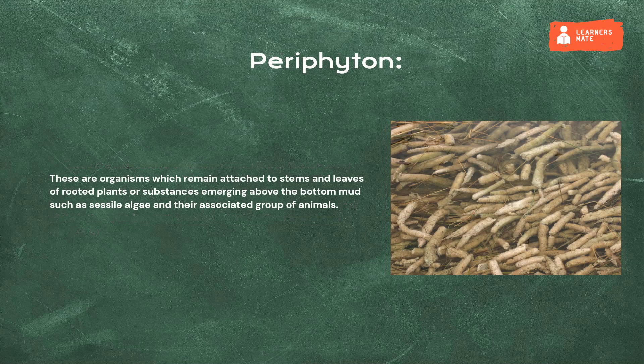Periphyton: these are organisms which remain attached to stems and leaves of rooted plants or substances emerging above the bottom mud, such as sessile algae and their associated group of animals.